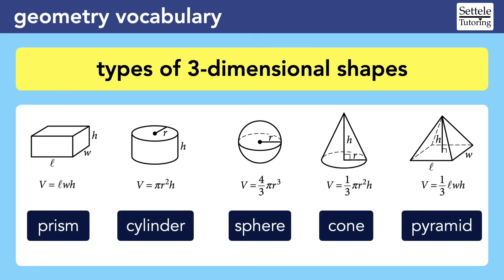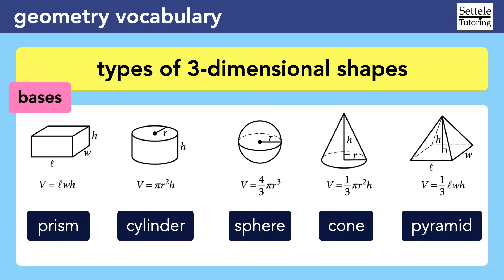You should also watch my lesson on the reference sheet for more information on the dimensions of these shapes. For now, I'll just remind you that some of these shapes have dimensions that are not listed. The cone and pyramid have a slant height in addition to the regular height. The pyramid also has an edge length that connects the top of the pyramid to the corners of the base. The base has a different meaning when working in three dimensions — for prisms and cylinders, the base is usually the entire top or bottom surface. The base of a rectangular prism is a rectangle, and the base of a cylinder is a circle. The cone and pyramid also have a base — a circle and rectangle respectively — while the sphere does not have a base because it's completely round.